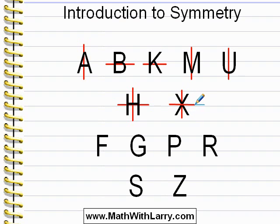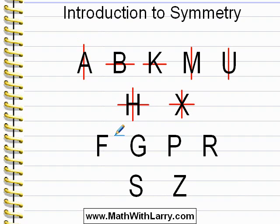Now take a look at these letters in the next row. If you look carefully, you'll see that these letters all have no lines of symmetry. There's no way to draw a line in these letters such that one half will be the mirror image of the other. Very often that's the case — they simply have no lines of symmetry.